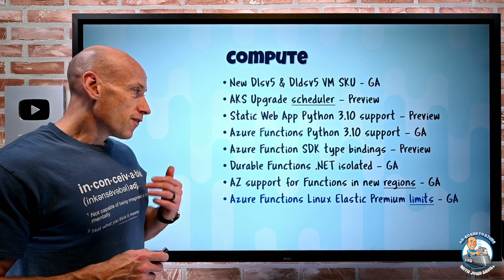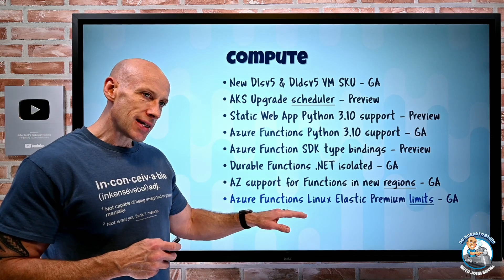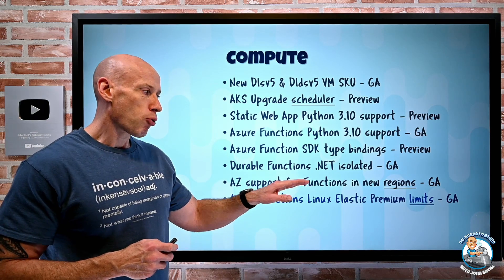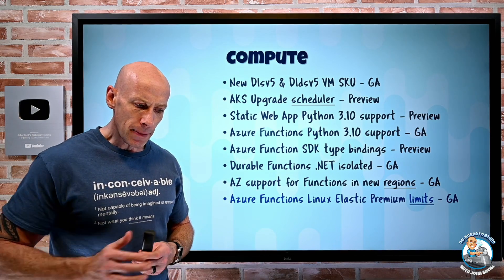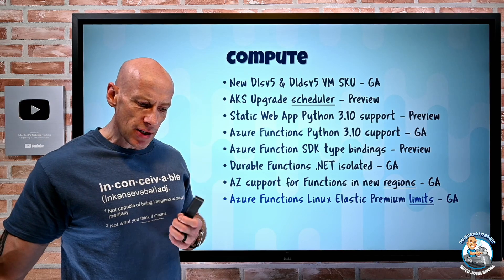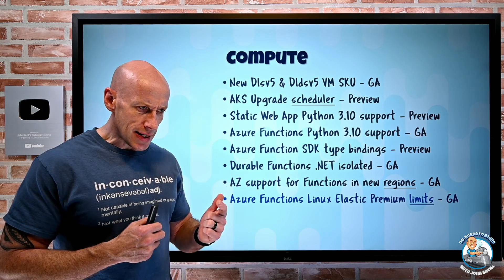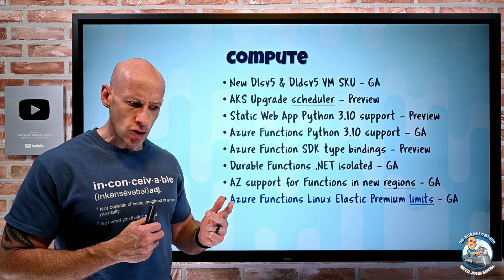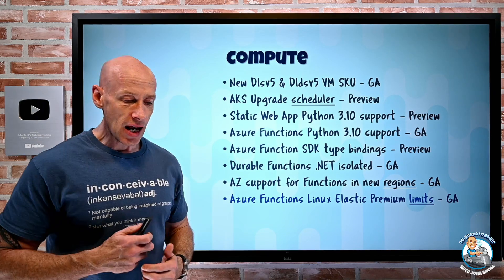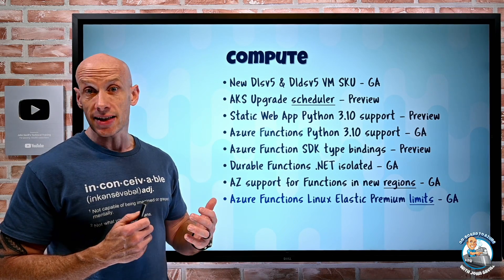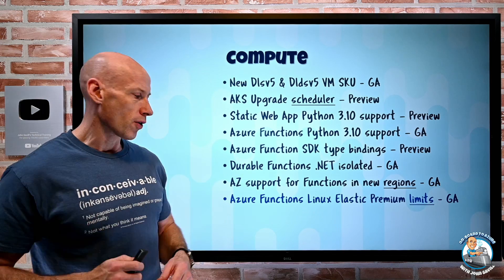Azure Functions has also increased the Linux-based Elastic Premium number of instances available. The exact numbers vary by region, but West US, UK South, South Central US, and North Europe increased to 100 instances, and France Central increased to 60. There's a limits page that shows all of those details.